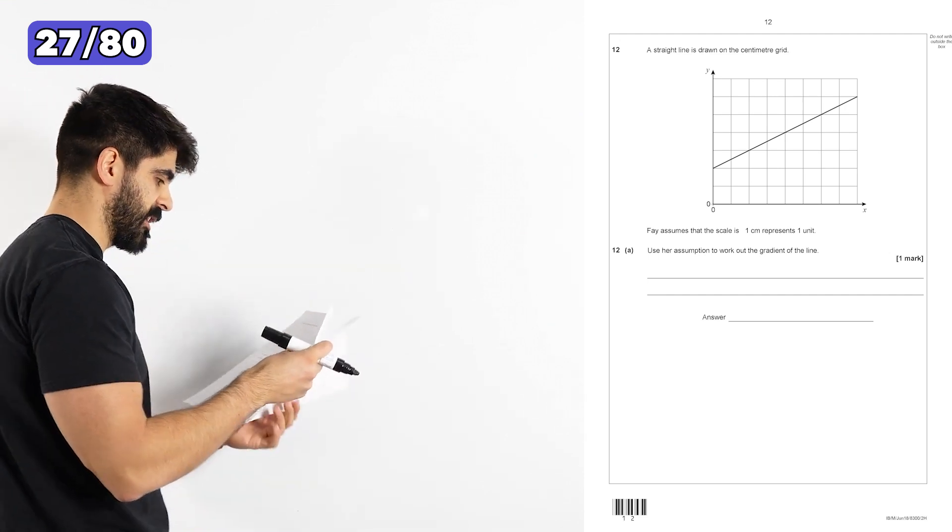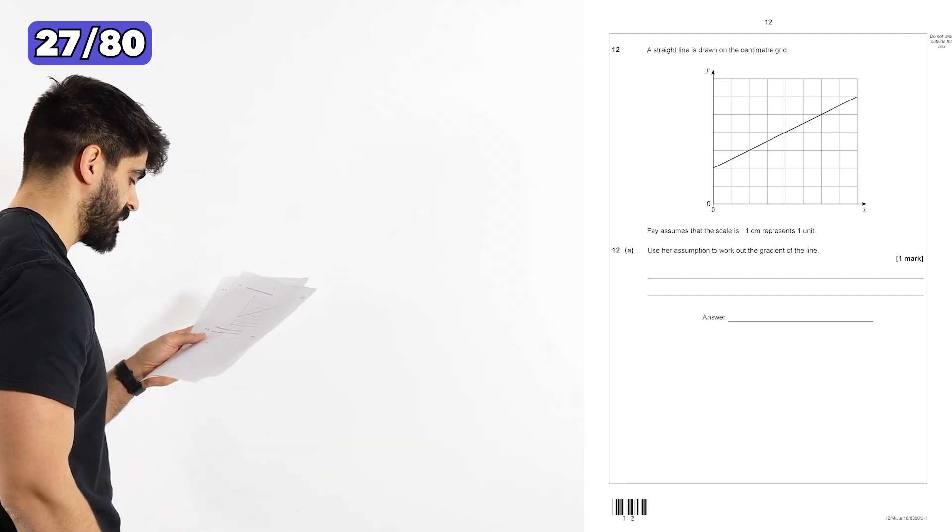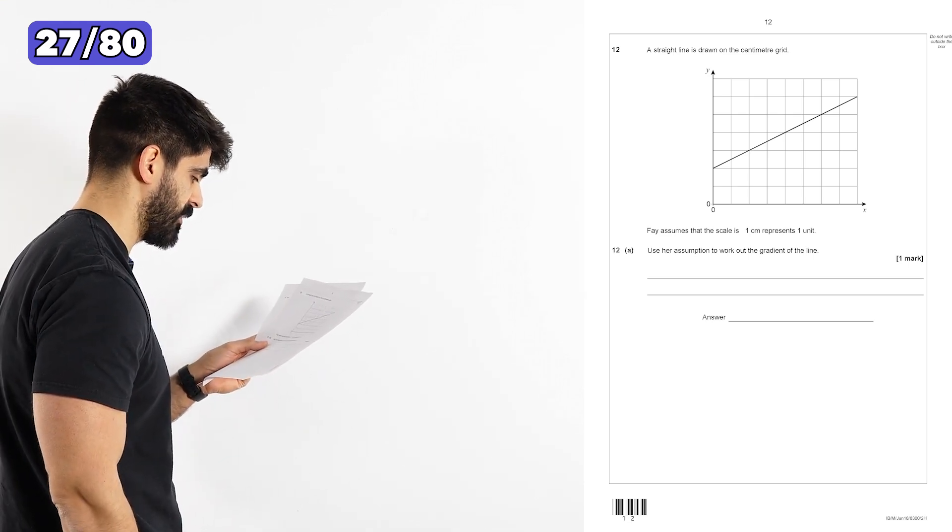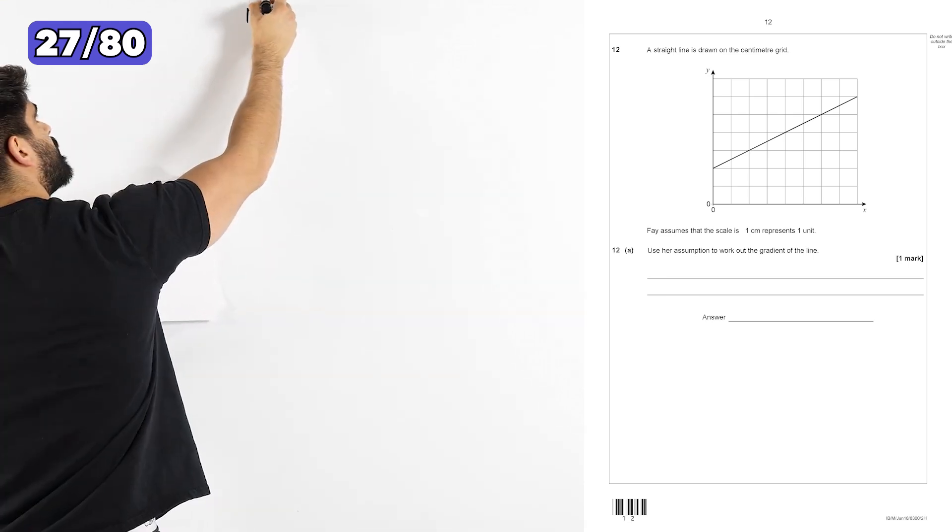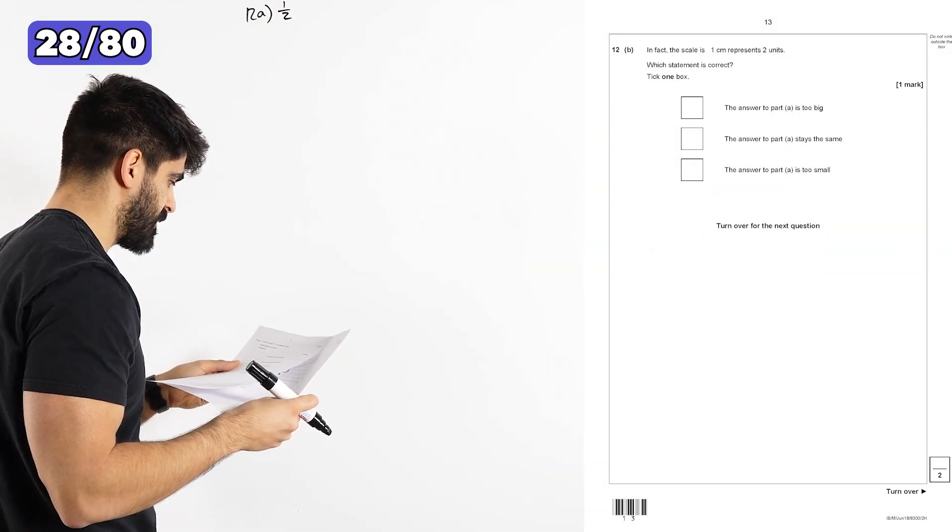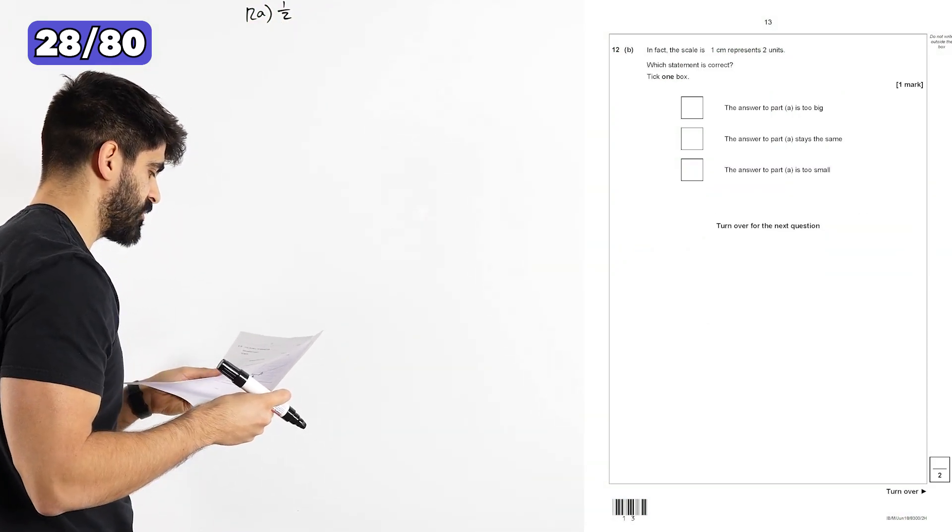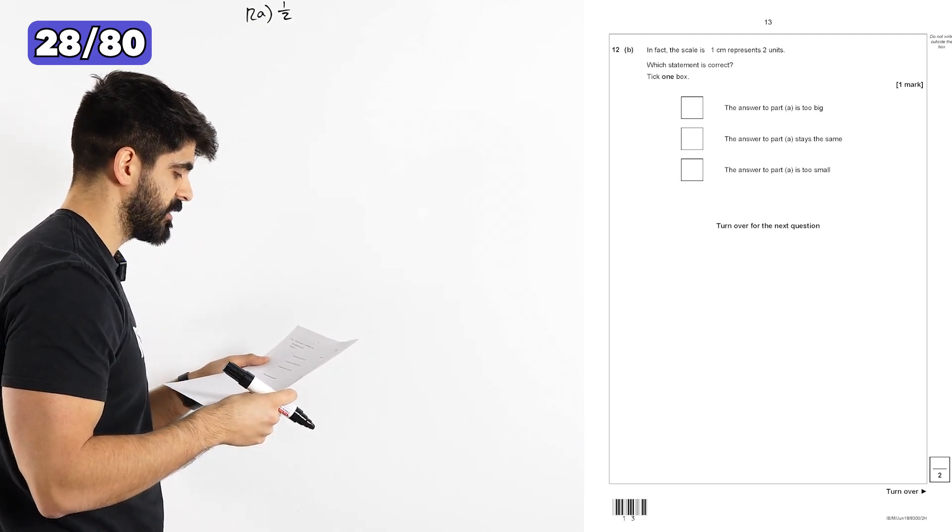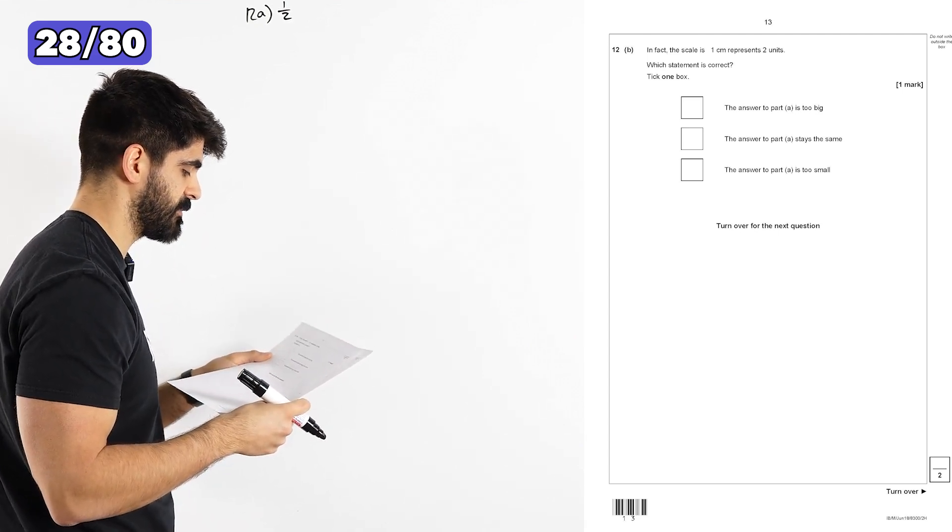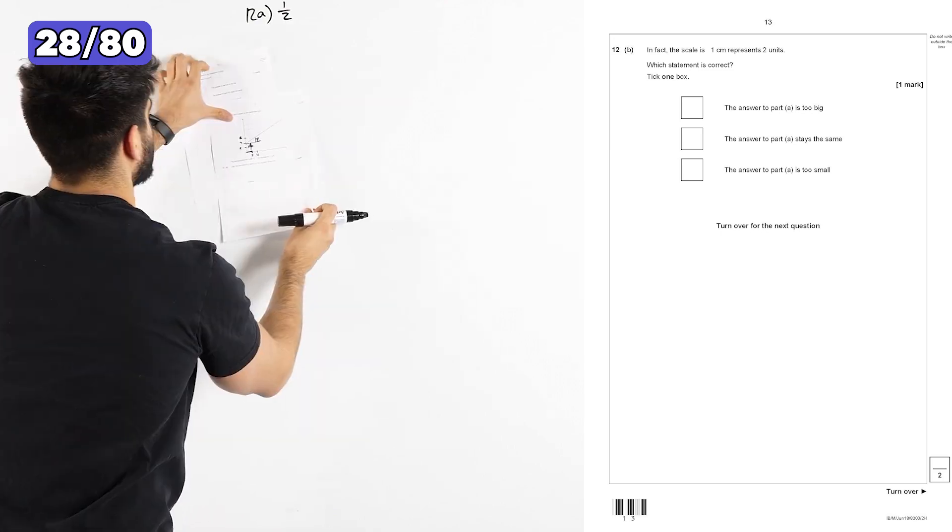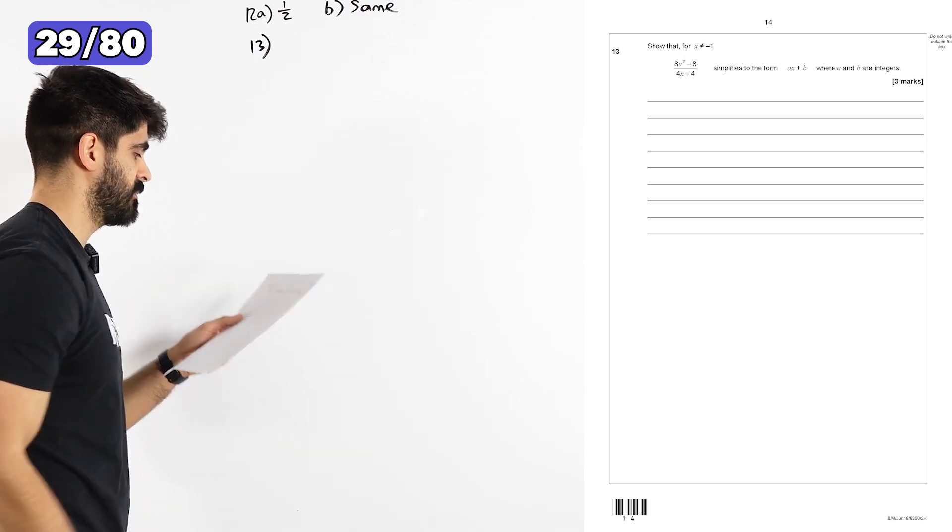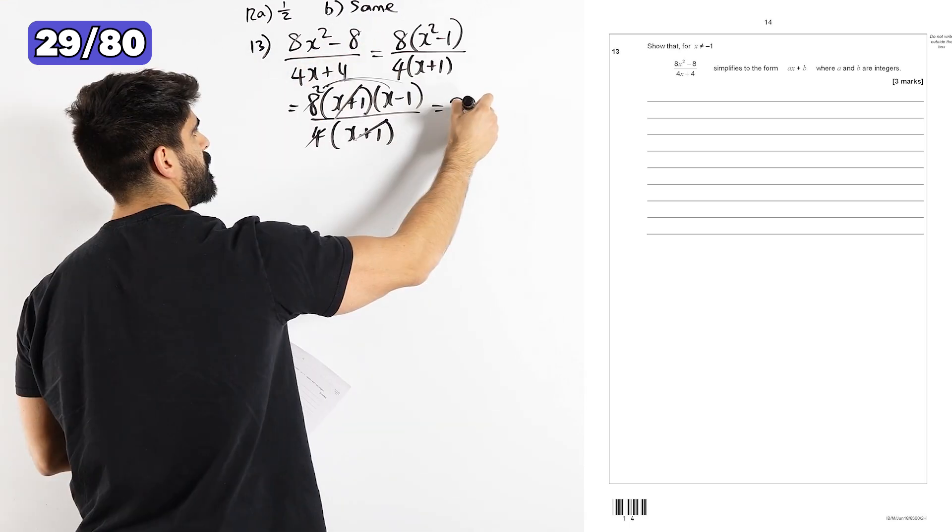Question 12, a straight line is drawn on the centimeter grid. Faye assumes that the scale is one centimeter represents one unit. Use her assumption to work out the gradient of the line. So 12A, the answer is one half. In fact, the scale is one centimeter represents two units. Which statement is correct? The answer to part A is too big. The answer to part A stays the same. The answer to part A is too small. Think about it. So part B is just the same. Question 13, show that for X is not equal to minus one, 4X plus 4 simplifies to 2X minus 2.